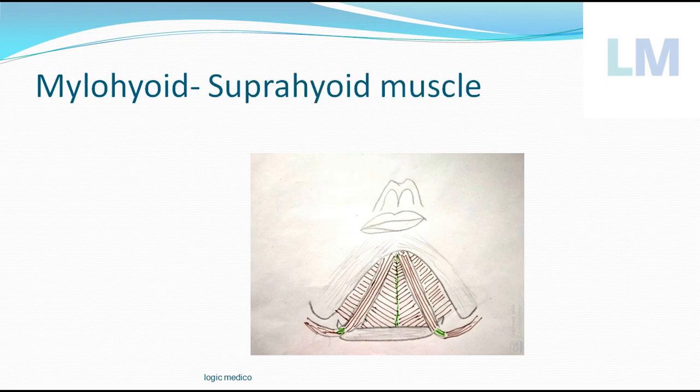This Mylohyoid muscle is one of the Suprahyoid muscles. Suprahyoid muscles are the group of muscles which are above the Hyoid bone. Supra means above. They are digastric muscle which you can see in this picture, Stylohyoid muscle, Mylohyoid, Geniohyoid and Hyoglossus to the tongue. All these muscles are above the Hyoid bone.